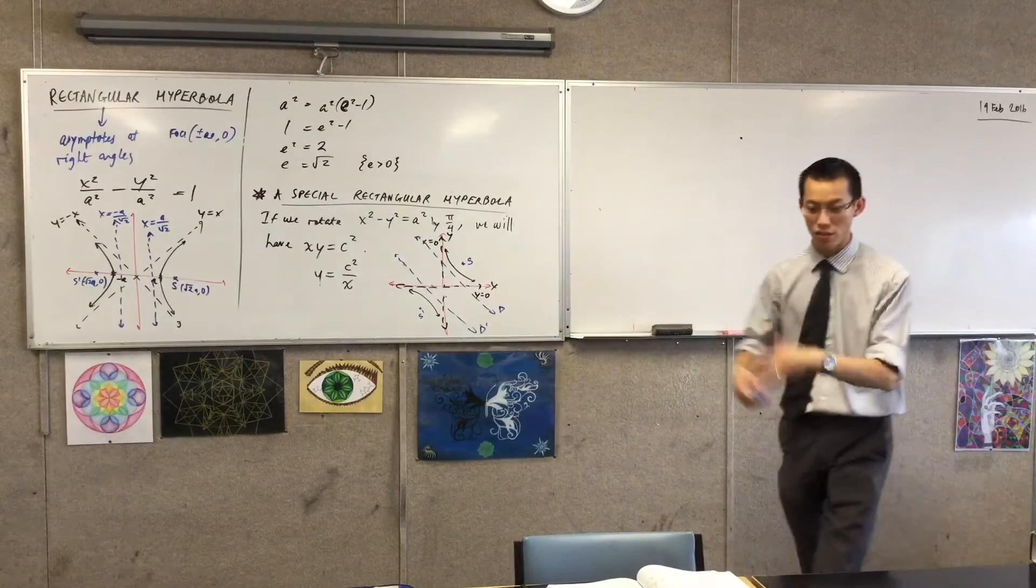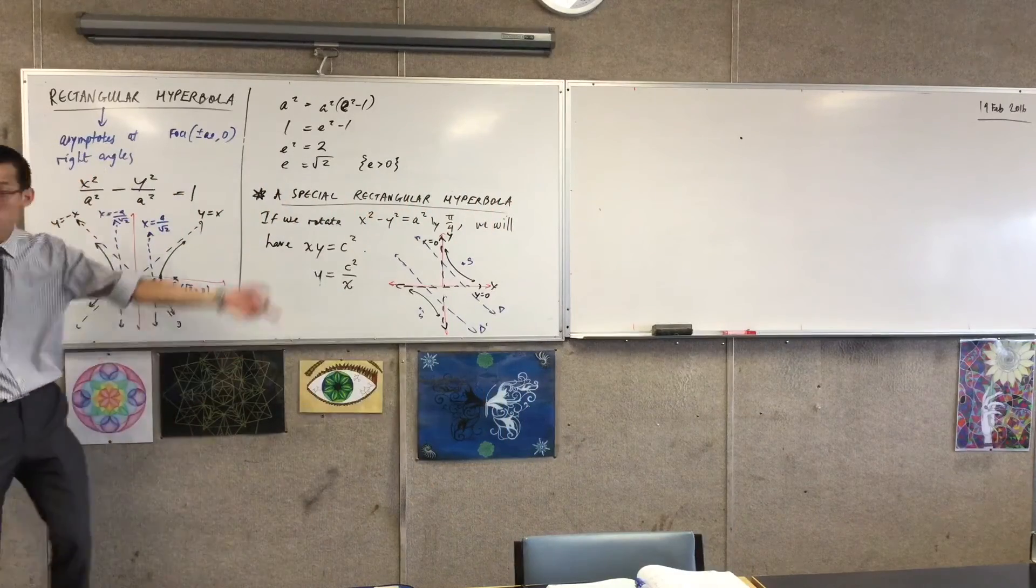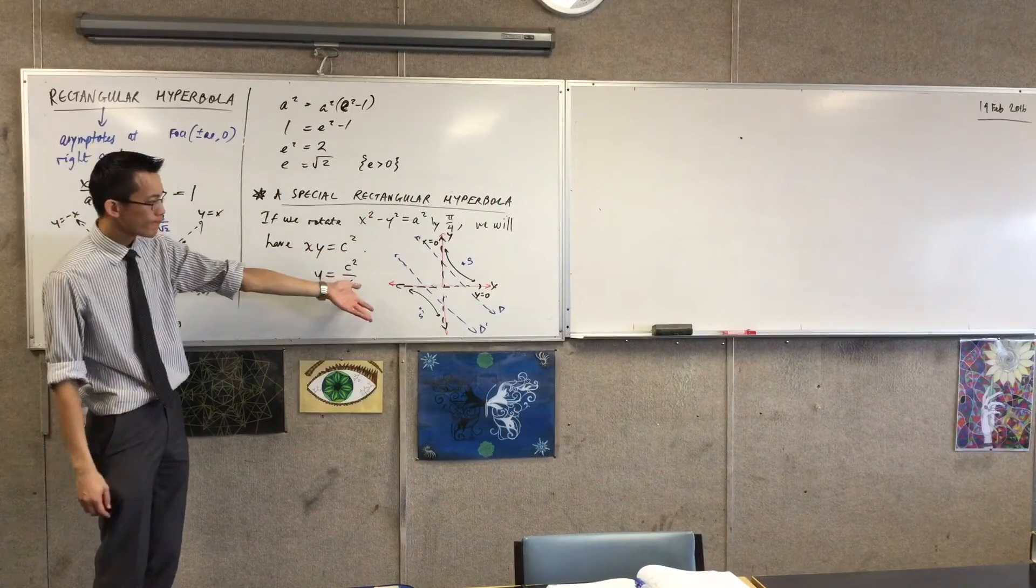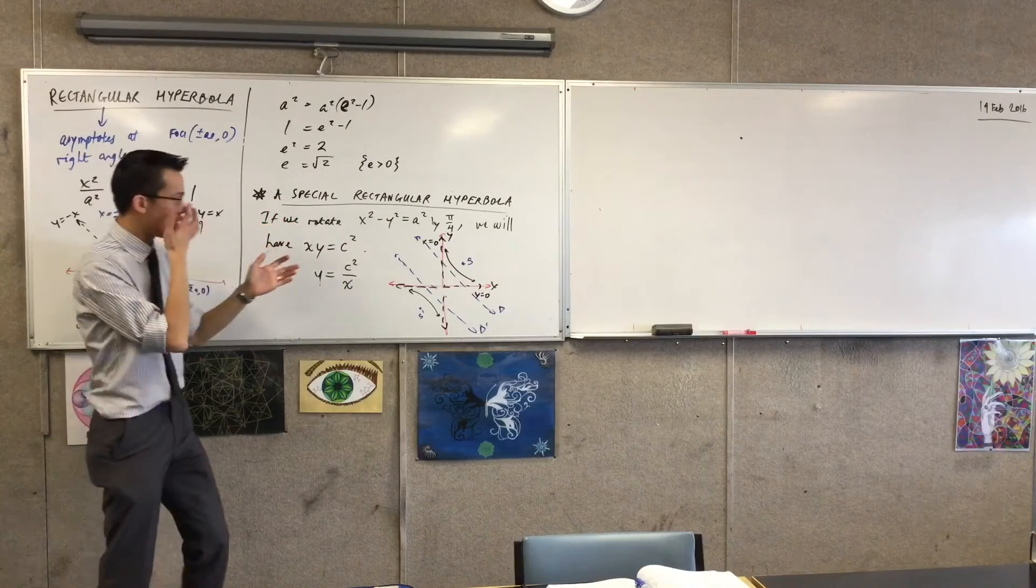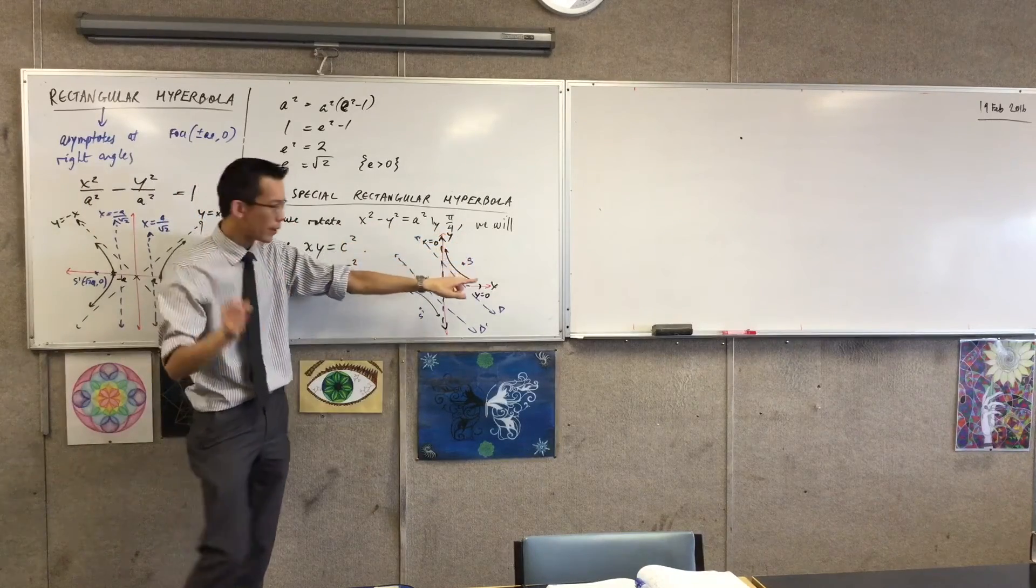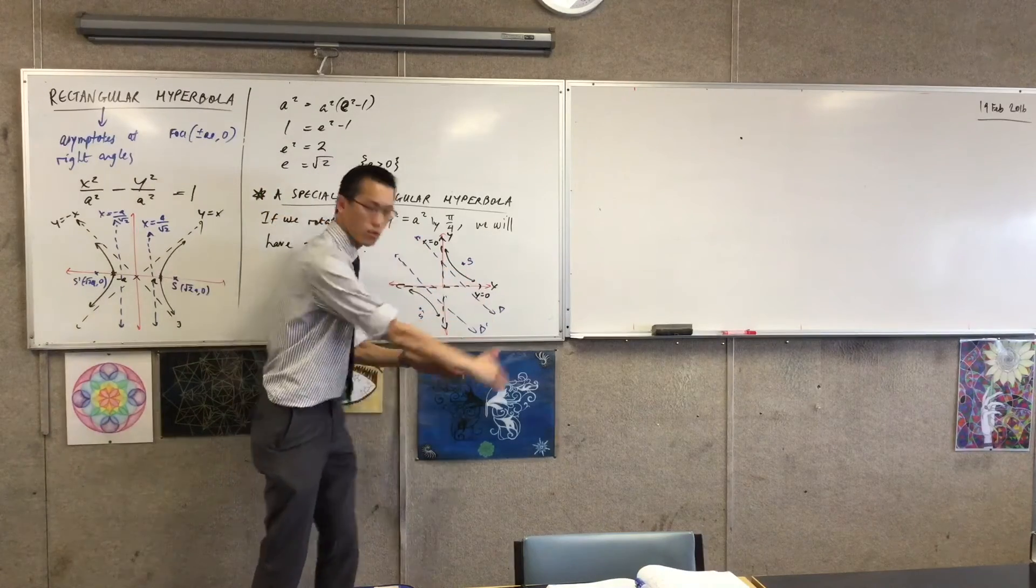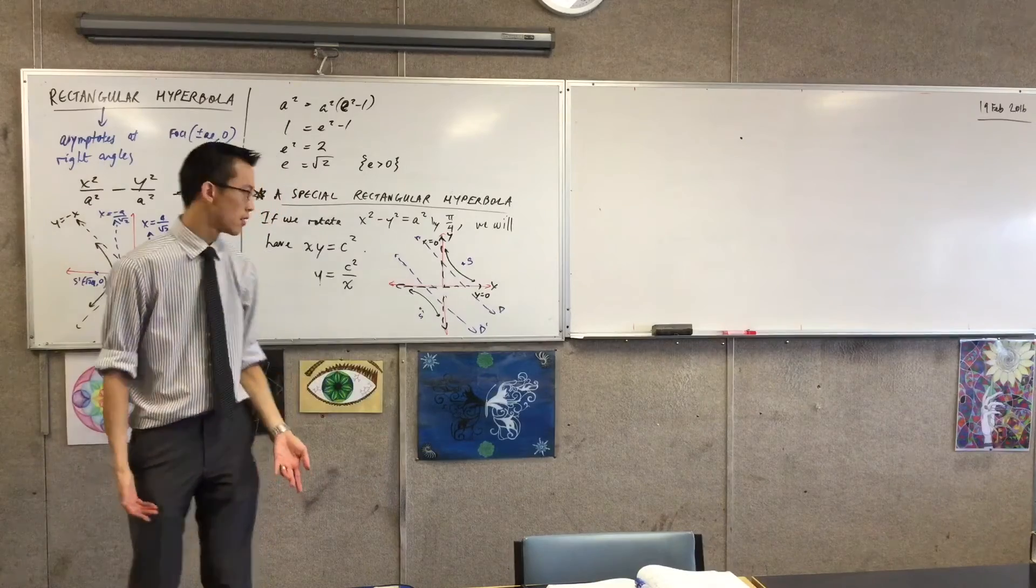To work out, well, if I know everything about this, and I know it's just this guy rotated by pi on 4 radian, I should be able to work out exactly where these coordinates are, and I should be able to work out exactly what those equations are, shouldn't I? I mean, for instance, just on the face of it.